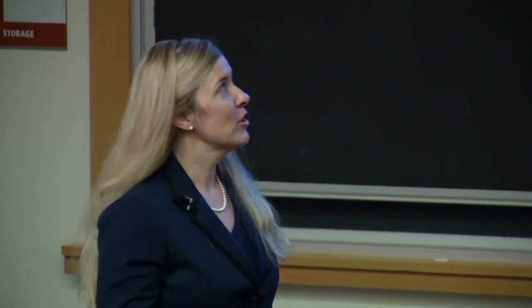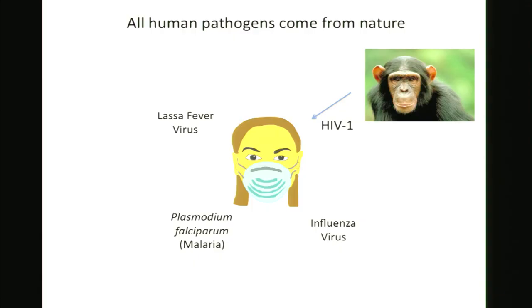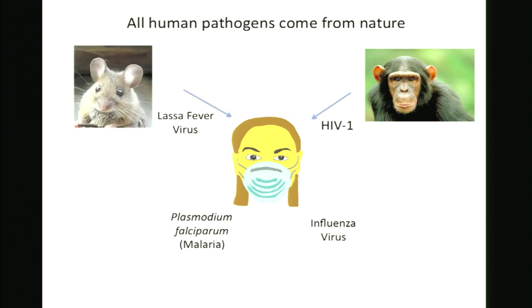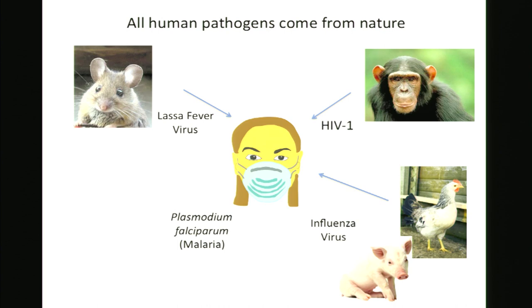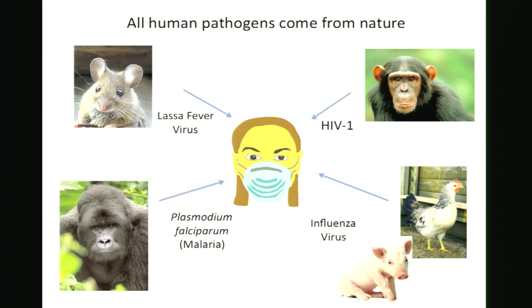As you know, humans face many different bacterial, viral, and eukaryotic pathogens. All of these pathogens came to us at some point or another from nature. For instance, HIV-1 was a cross-species transmission from chimpanzees. Africans are regularly infected by Lassa fever virus, which they acquire through contact with local rodent populations. New strains of flu come to us from birds and pigs. And Plasmodium falciparum, the causative agent of malaria, was transmitted to humans from gorillas.